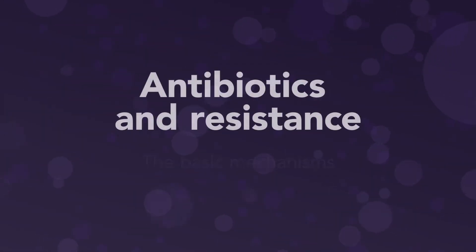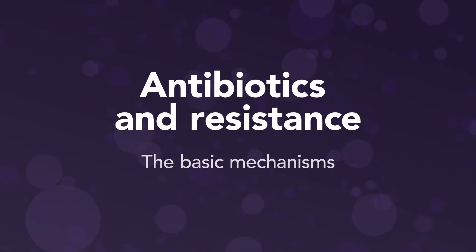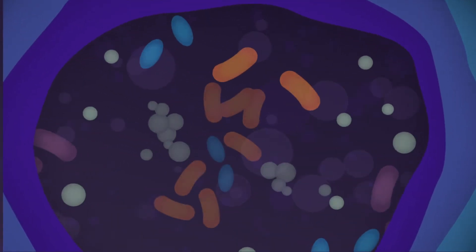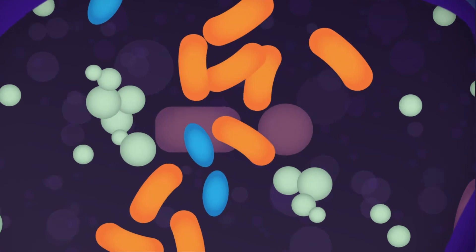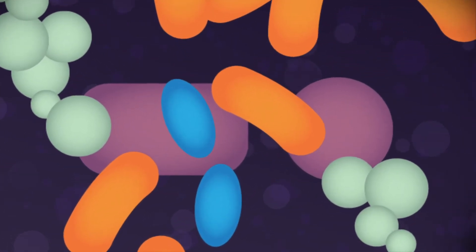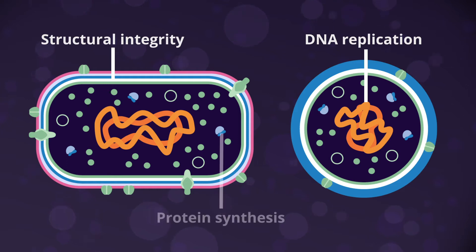This animation will walk you through the basics on how different classes of antibiotics work and some of the most common mechanisms of resistance that stop them from working. For antibiotics to inhibit or kill bacteria, they need to target one of the core structures or physiological functions that bacteria need to survive and replicate. These include structural integrity, DNA replication, and protein synthesis.